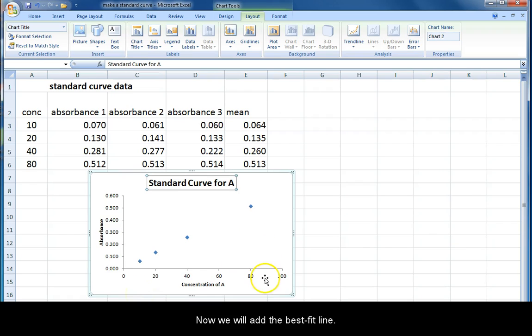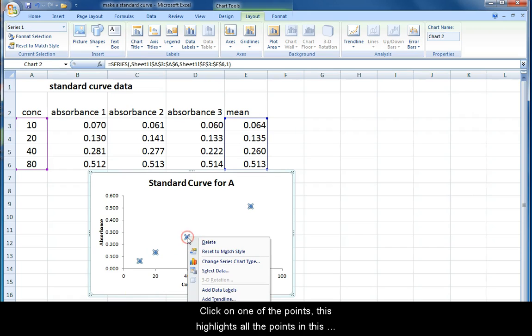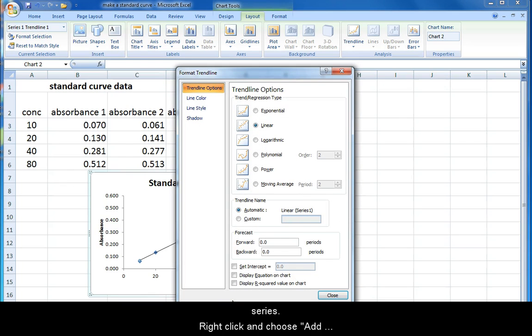Now we will add the best fit line. In Excel this is called a trend line. Click on one of the points in the graph. This highlights all the points in this series. Right-click and choose add trend line. This is a linear trend line, so choose a linear trend regression type.